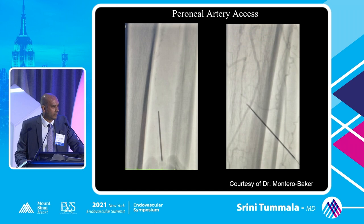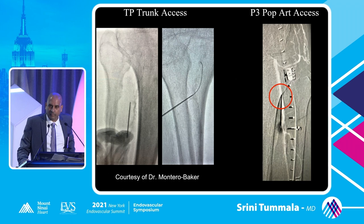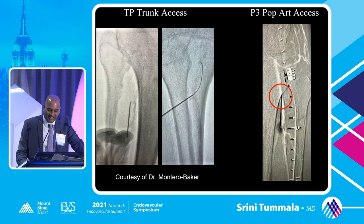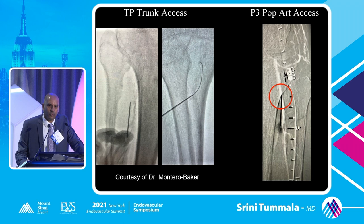Miguel Montero-Baker, a vascular surgeon out in Houston, is shown here not only accessing the peroneal artery, but also accessing the TP trunk and the P3 segment of the popliteal artery. Remember, this is not to be taken lightly — these are limb salvage cases. I would not do this in a cavalier fashion with a claudicant. The risk of compartment syndrome and significant bleeding is pretty high if you're unable to cross and deliver therapy from above.